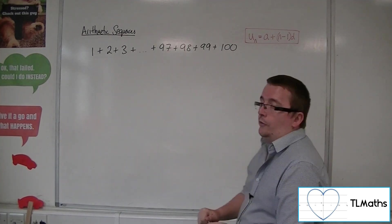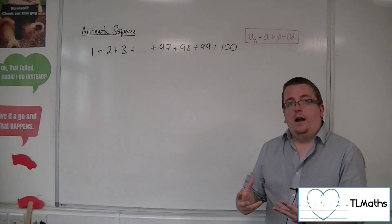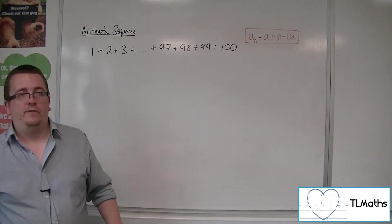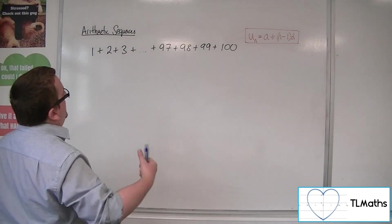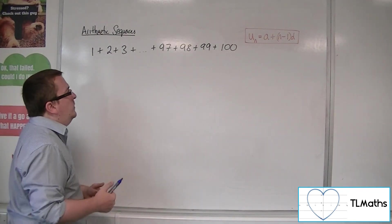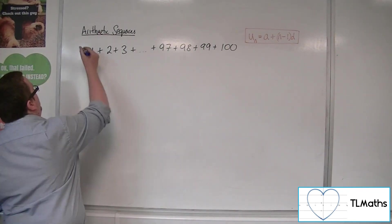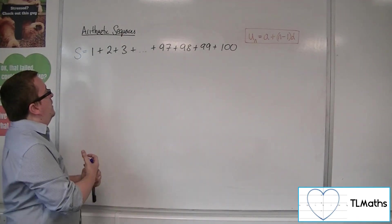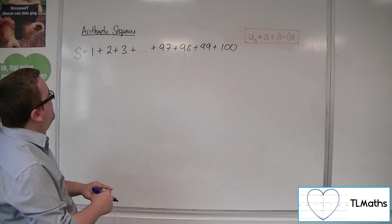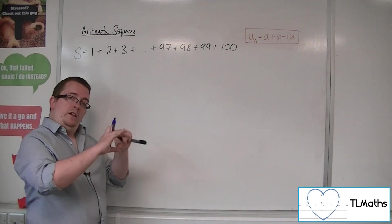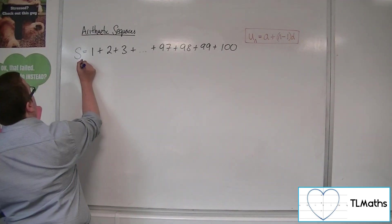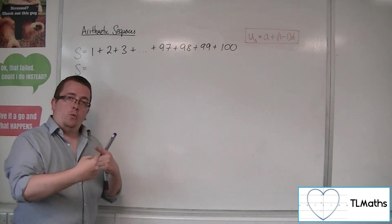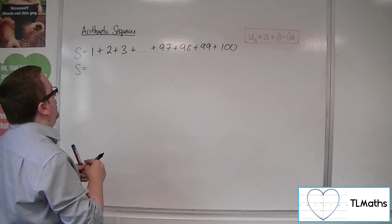But Gauss found a way to speed the process up. Actually, he managed to do it relatively quickly. And the way that he did it was this: he thought, well, if this is the answer I'm looking for, this S, then what I could say is that I could write the same sequence underneath but the other way, in opposite order.